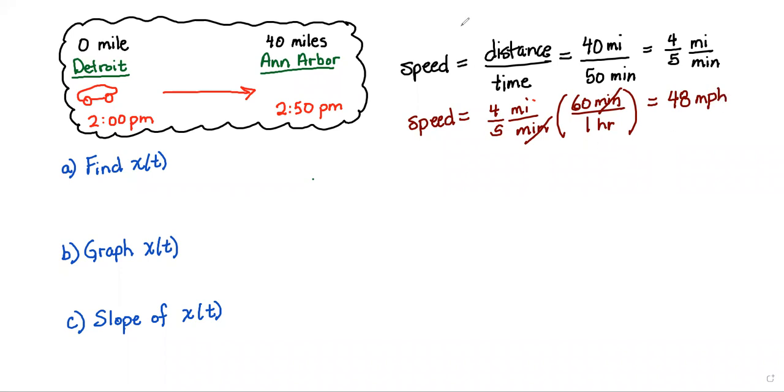All right, let's go ahead now and take a look at finding our position as a function of time. We know position is rate times time, and our rate is 4/5. If we do it miles per minute times time, so long as t is in minutes, we can use this equation.